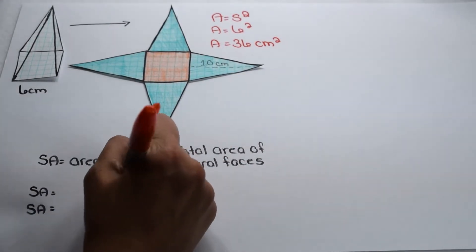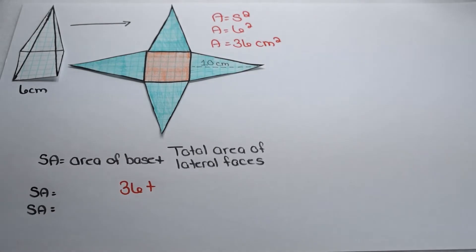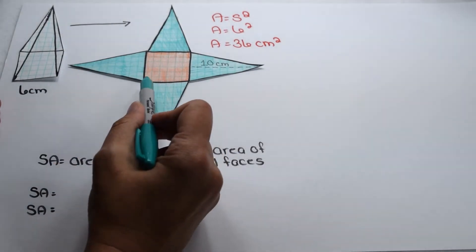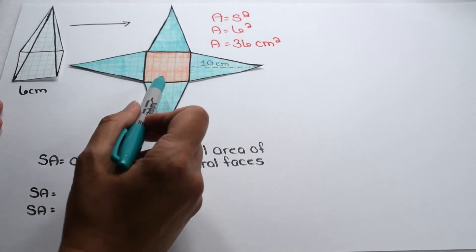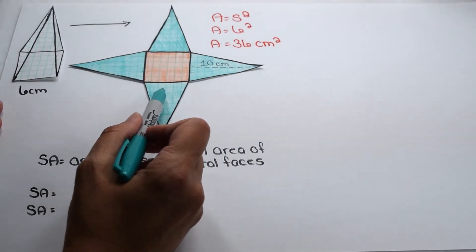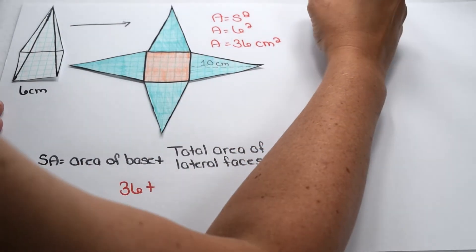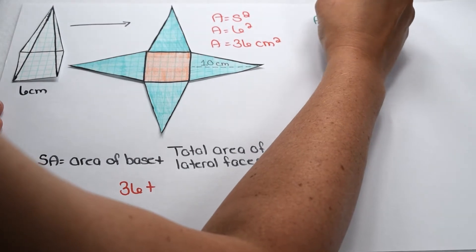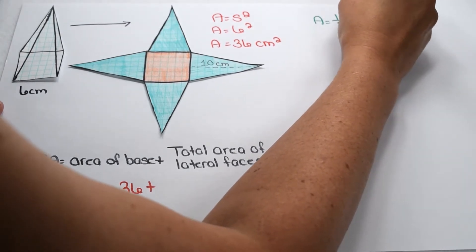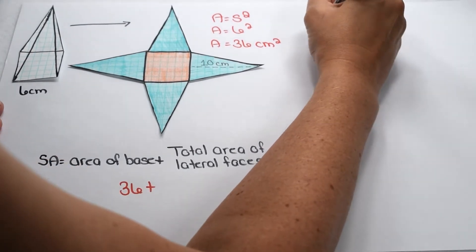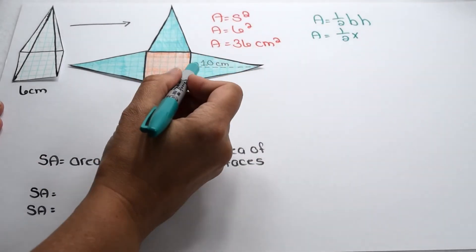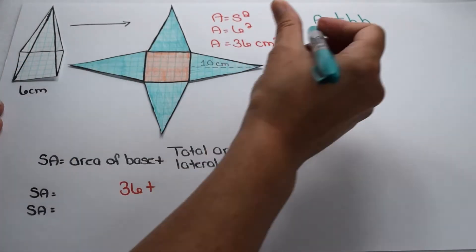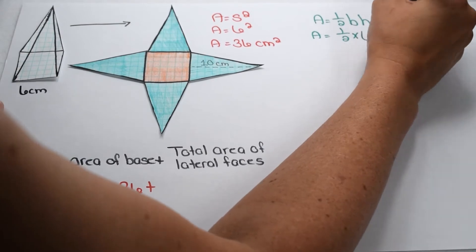We can put that 36 into our equation. Since our square is a regular polygon, each of the triangular lateral faces are going to be congruent to each other, so we just need to find the area of one of these triangles. The area of a triangle is one half times base times height. The base of our triangle connects to the base of the pyramid, so it's going to be 6 centimeters long.